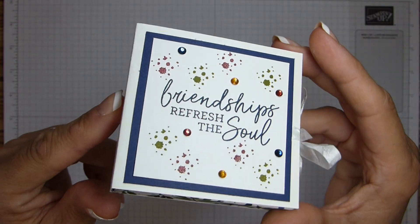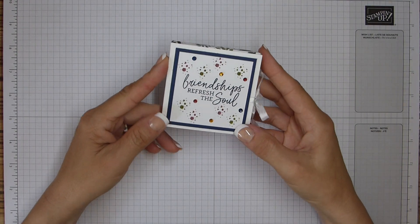This time I've used the Beauty of the Earth DSP and the Beauty of Friendship stamp set, but I've added some of the holiday rhinestones just to pick out some of the colour. I think they work really well. It doesn't have to be all trees and hedges and things, does it really?